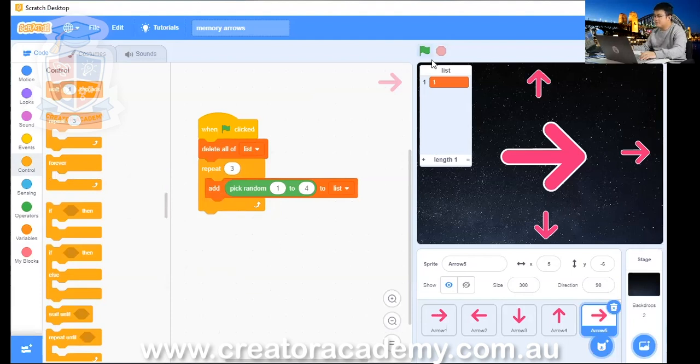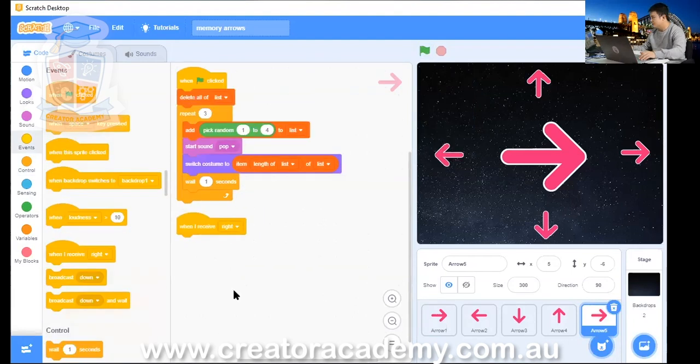So now when we press the flag, it'll always add three random numbers between one and four. And then we do this.